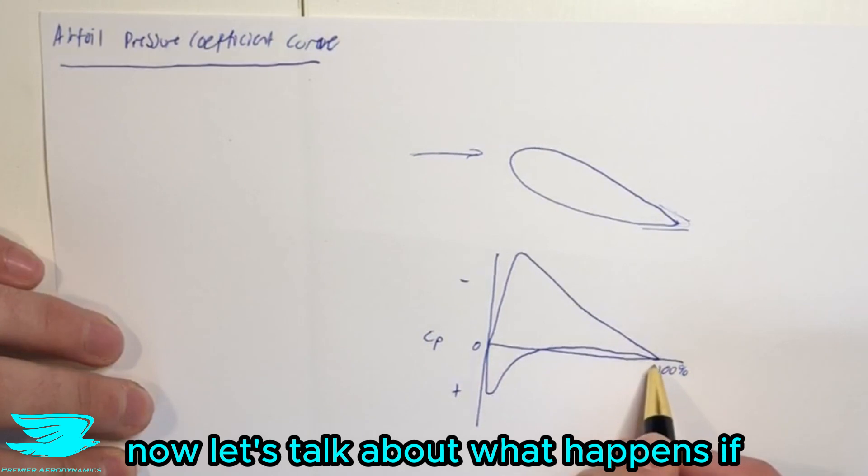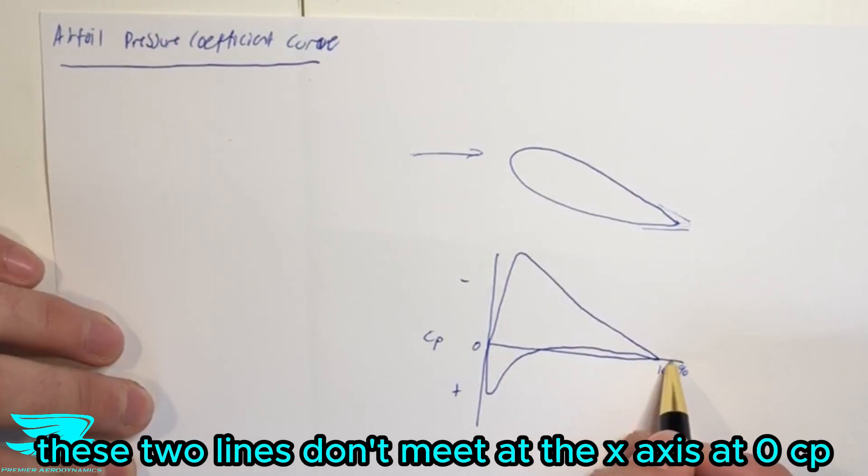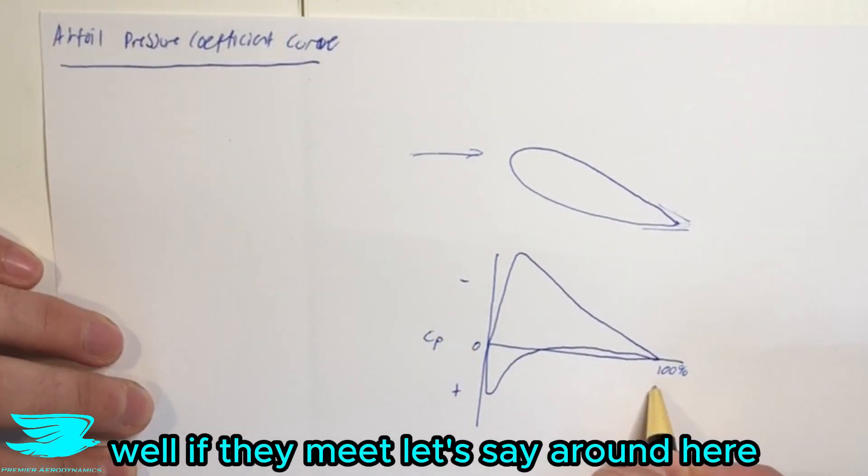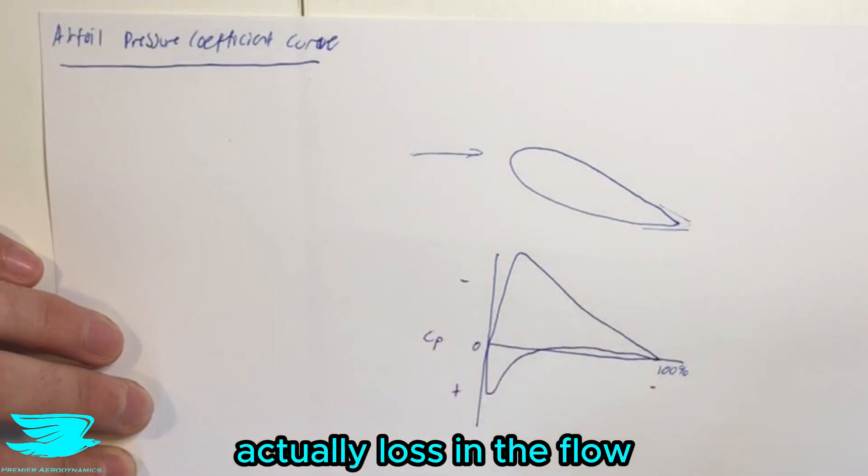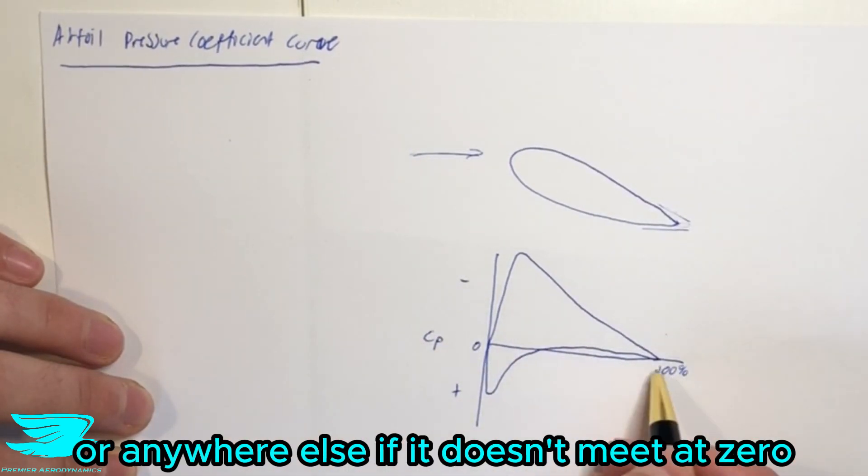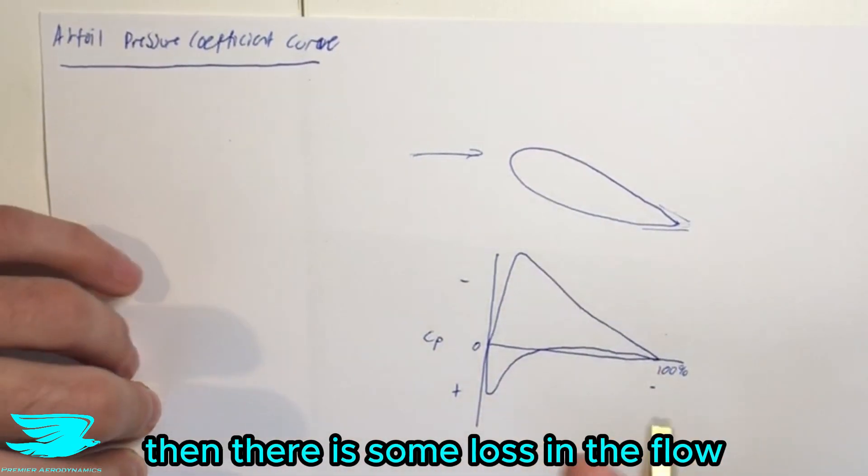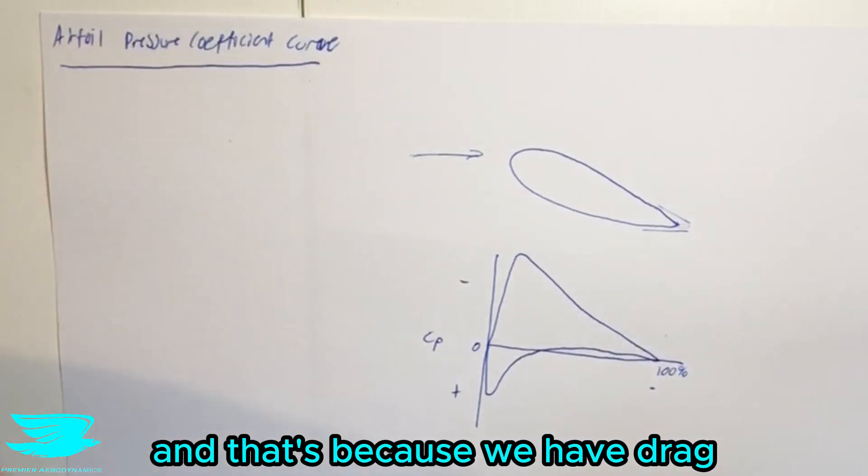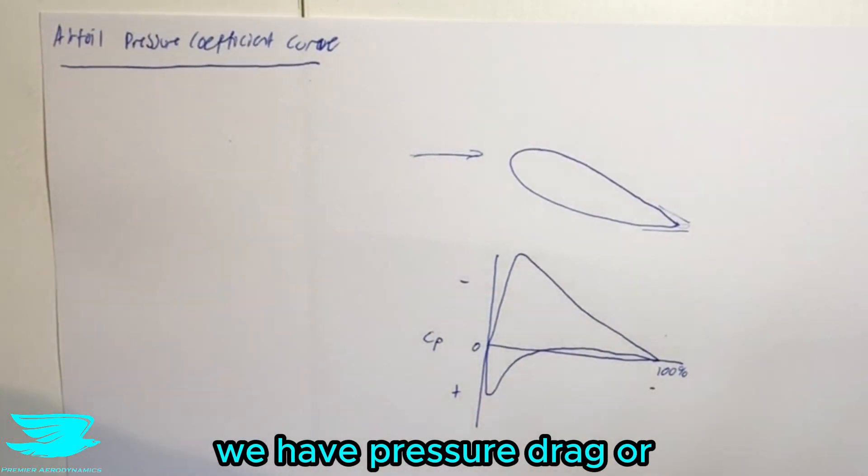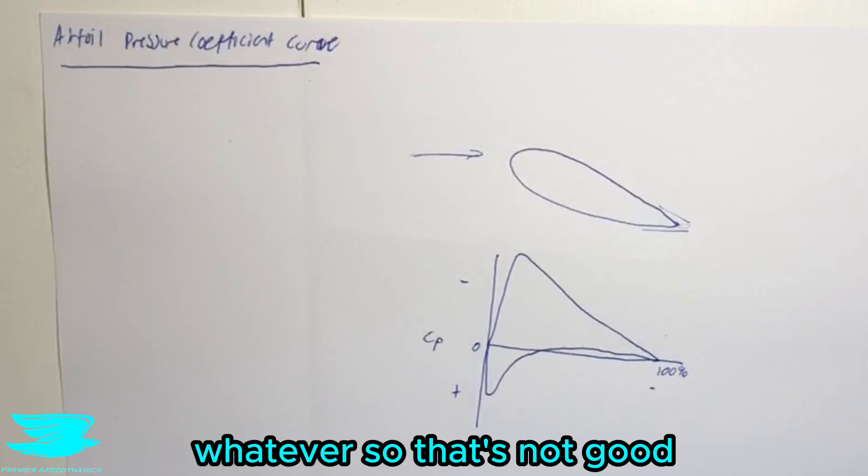Now, let's talk about what happens if these two lines don't meet the x-axis at zero CP. Well, if they meet, let's say, around here, then that means that there's actually loss in the flow or anywhere else. If it doesn't meet at zero, then there is some loss in the flow. And that's because we have drag. We have friction drag. We have pressure drag or whatever. So that's not good.